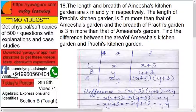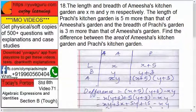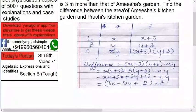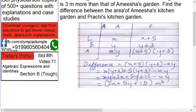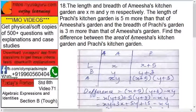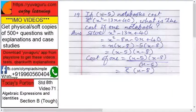The difference is (x+5)(y+3) minus xy. Expanding the brackets: x(y+3) plus 5(y+3) gives xy plus 3x plus 5y plus 15 minus xy. The xy terms cancel, leaving 3x plus 5y plus 15 square meters as the difference between the areas of A and P.